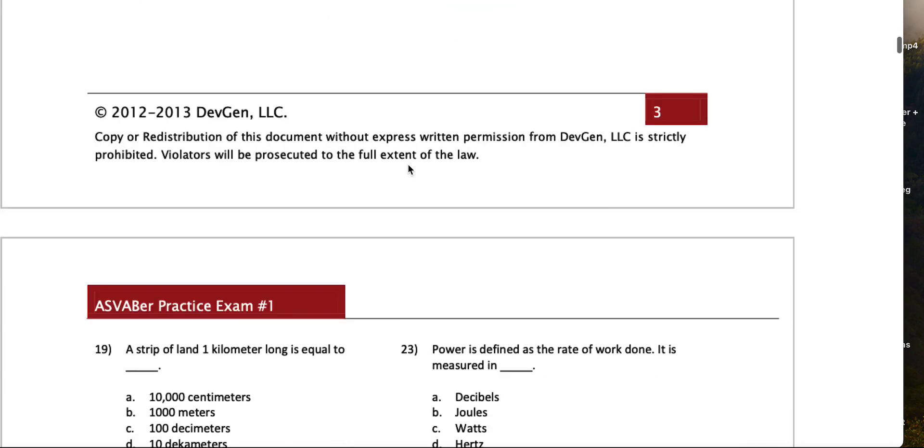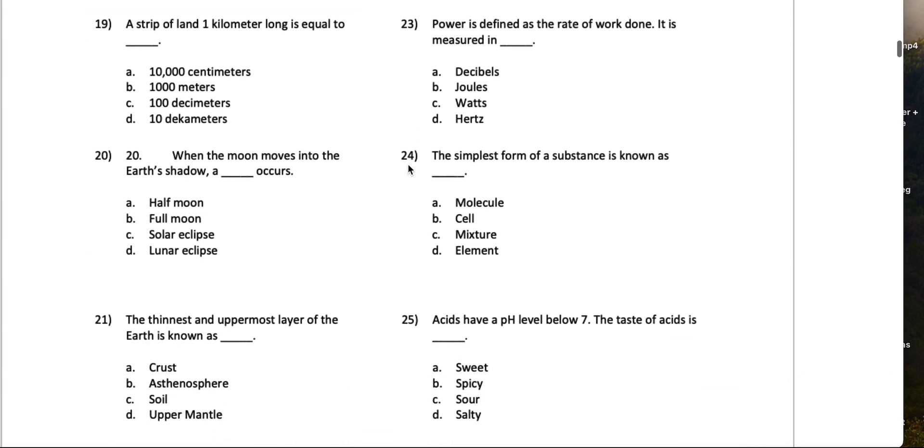A strip of land one kilometer long is equal to a thousand meters. It says kilo, so kilo is a thousand.